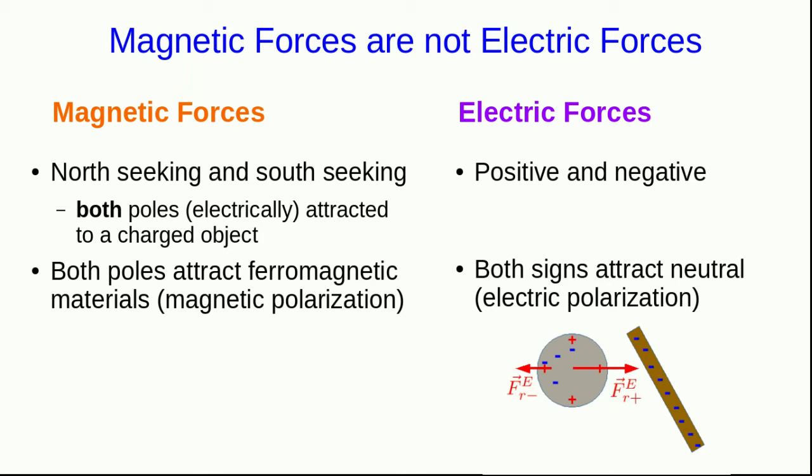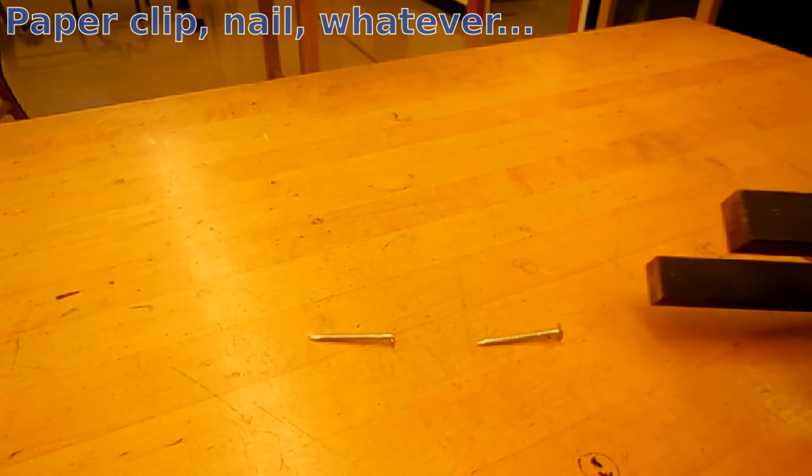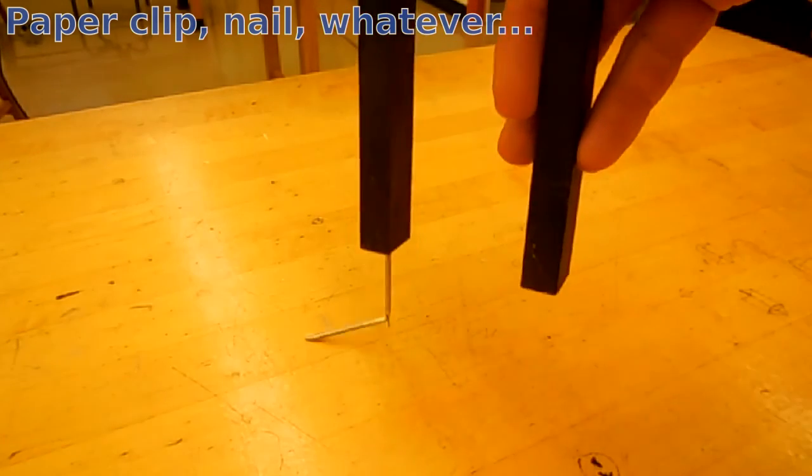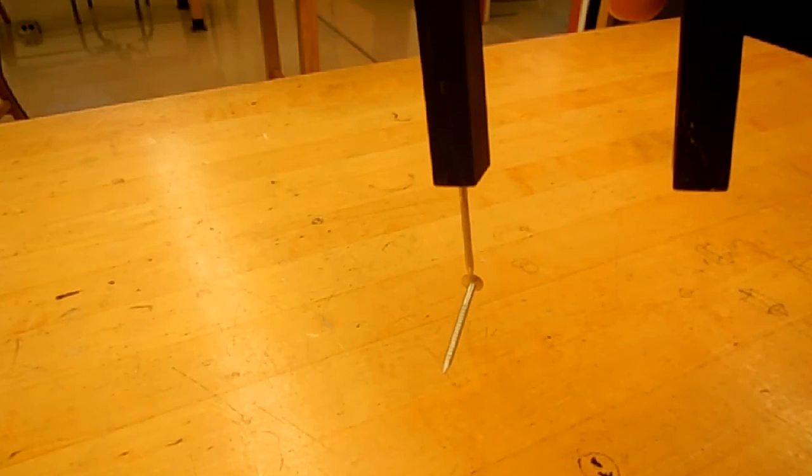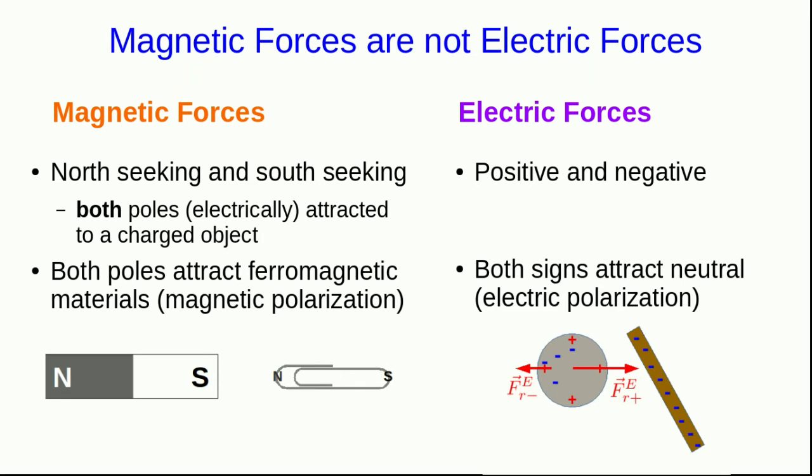However, both poles of a magnet attract ferromagnetic materials, and this is because of magnetic polarization. So this is probably another reason for the confusion. This actually looks rather similar. You will have noticed that when you pick up a paperclip, say with a magnet, that paperclip can then pick up another paperclip. That's because a ferromagnetic object in the vicinity of a magnet becomes magnetically polarized. It has a north pole and a south pole.